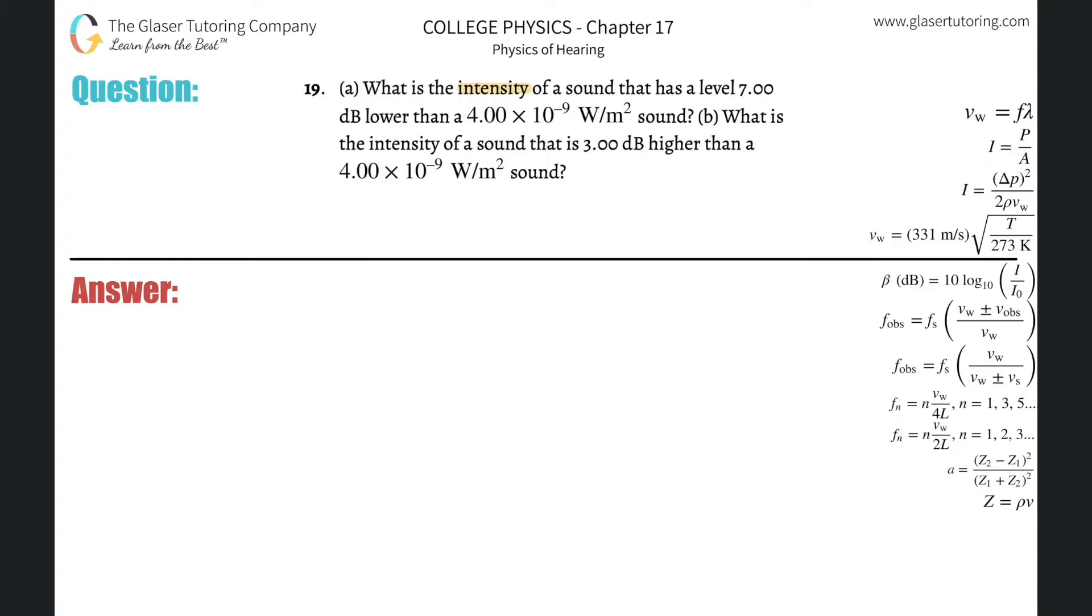Number 19, what is the intensity of a sound that has a level 7 decibels lower than a 4 times 10 to the minus 9 watts per meter squared sound? All right, so for letter A, let's write it over here. I basically got to do this in a couple of steps. I'm not going to do it all in terms of formula substitutions. I'm going to do it in a series of steps.